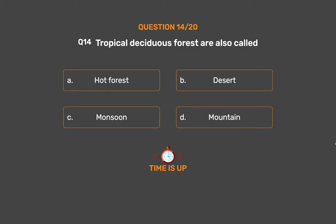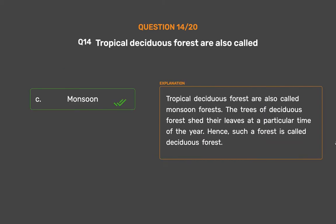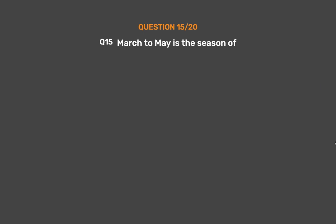The correct answer is Option C: Monsoon. Tropical deciduous forests are also called monsoon forests. The trees of deciduous forests shed their leaves at a particular time of the year. Hence, such a forest is called a deciduous forest.